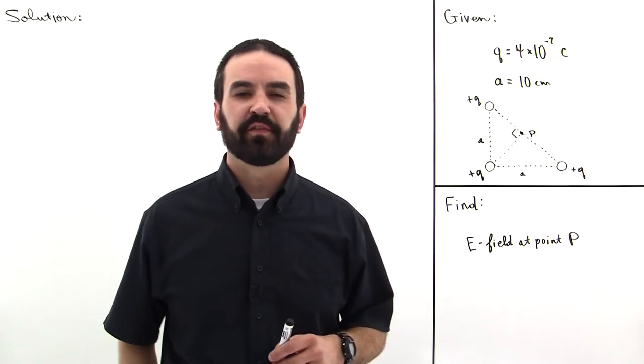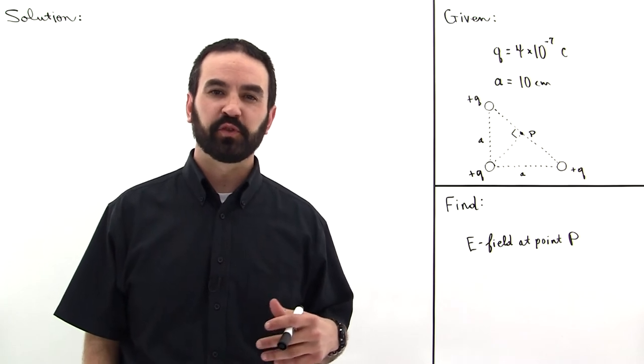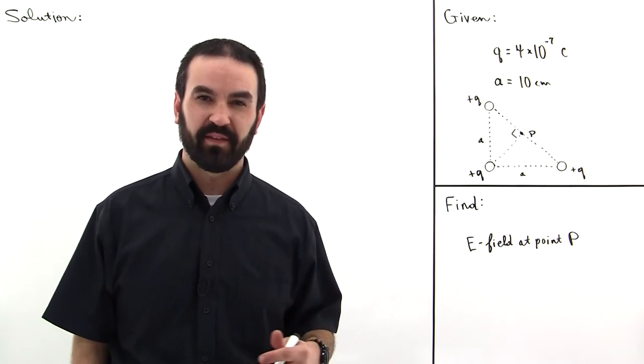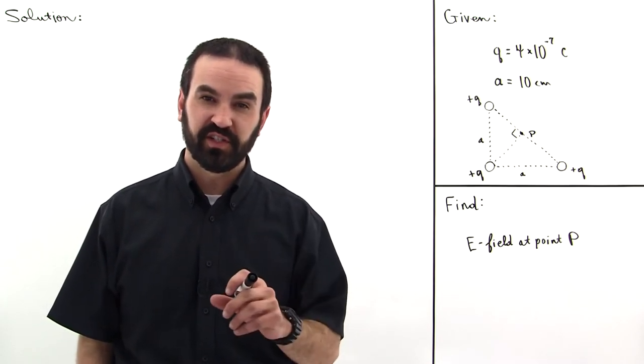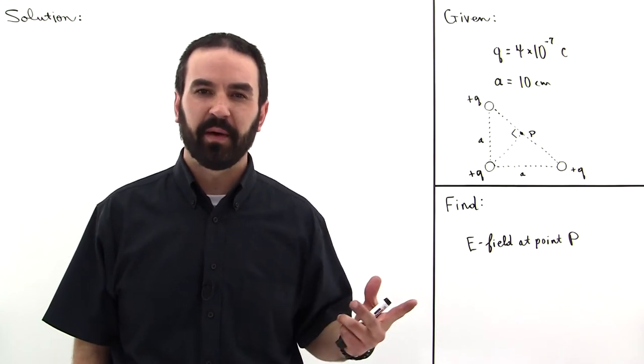Given this charge configuration, find the E field at point P. We're going to need to use the principle of superposition to solve this problem because we have the E field due to three different charges. So we find the E field due to each respective charge and then add them up vectorially.